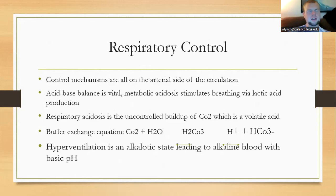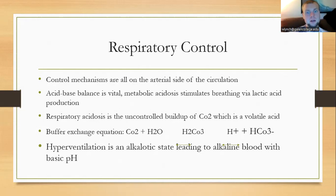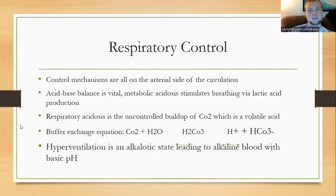In the blood, there is a buffer for carbon dioxide called the carbonic acid equation. Carbon dioxide combines with water through an enzyme known as carbonic anhydrase. This is a reversible reaction — we can go to bicarbonate and a hydrogen ion, or go back to carbon dioxide and water. At the level of the lungs, we convert carbonic acid back to carbon dioxide and water so we can breathe it off. When we expire, we breathe out not just carbon dioxide but also water vapor.